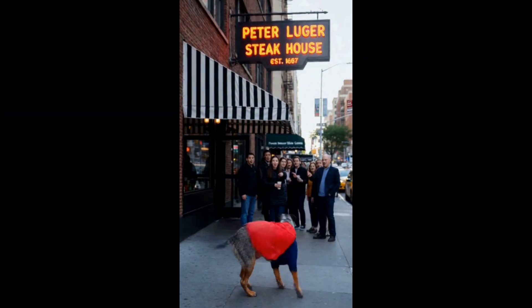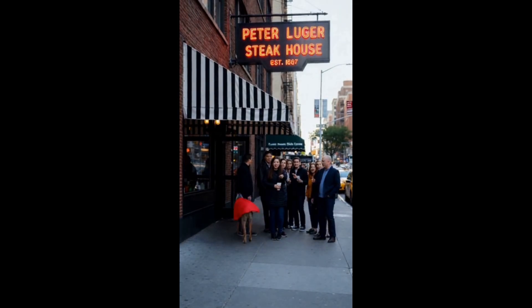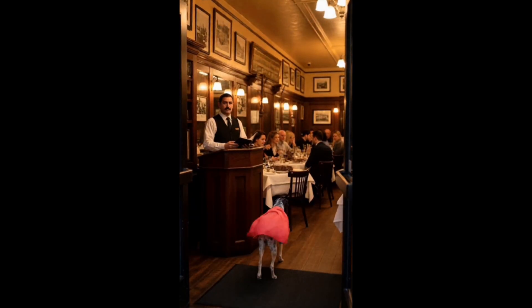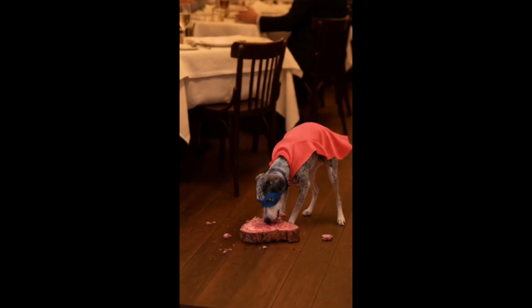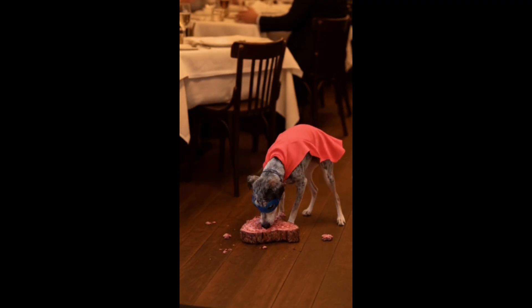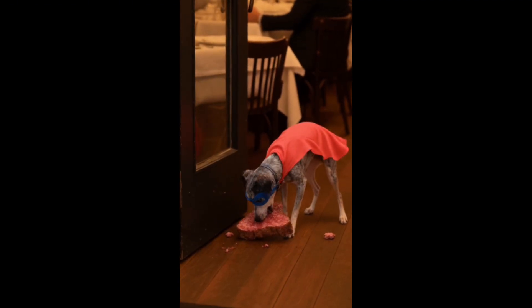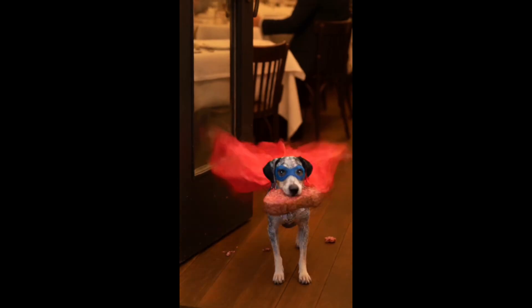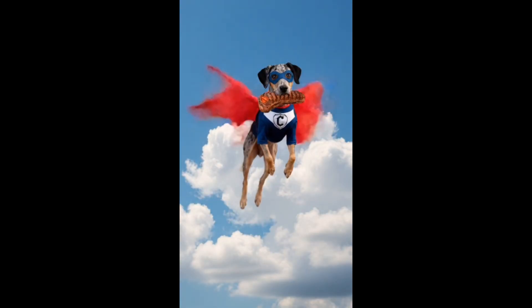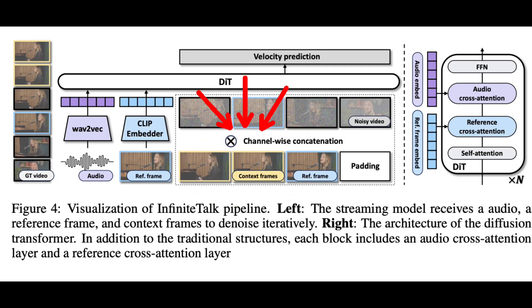Infinite Talk is a state-of-the-art lip sync model where you give it an audio and an image or video, and your output video contains lip-synced action to your input audio. Infinite Talk also has an interesting feature where the model takes in multiple frames from a video when creating its output, which makes it very good for extending existing videos. So if you keep extending videos using Infinite Talk, you can get continuous action for as long as you want — you can make infinite videos.